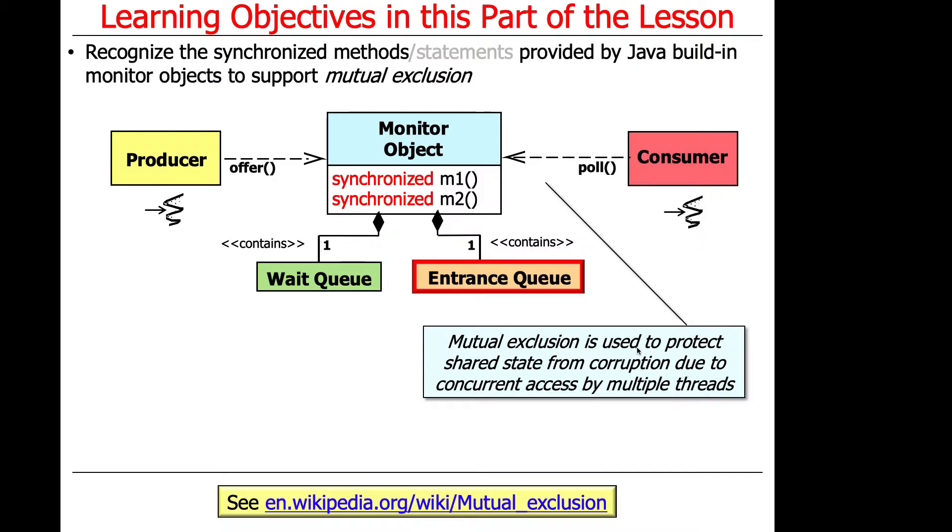And so we'll start by talking about synchronized methods, which are a mechanism provided by Java's built-in monitor objects to support mutual exclusion. So hopefully you know what mutual exclusion is at this point.